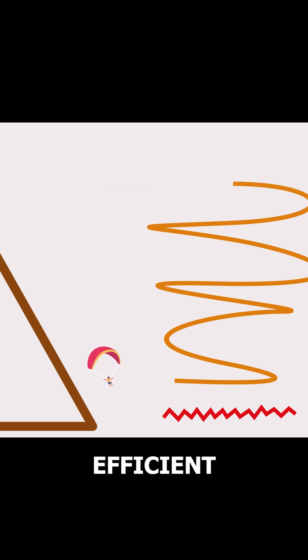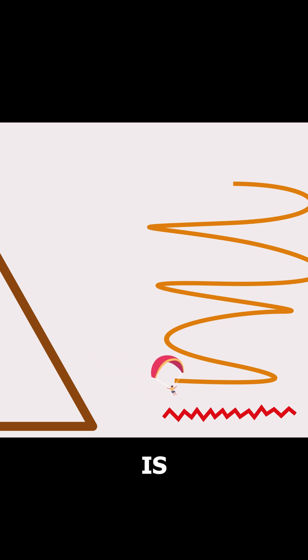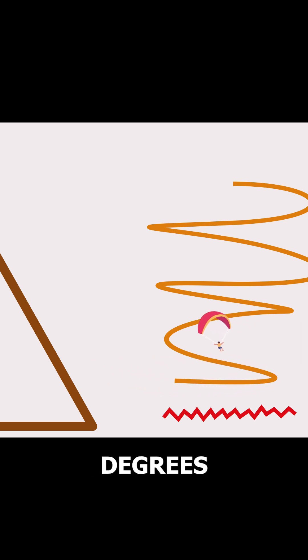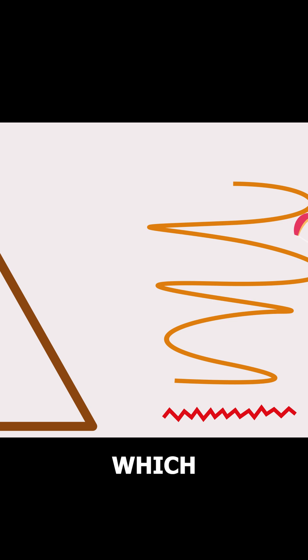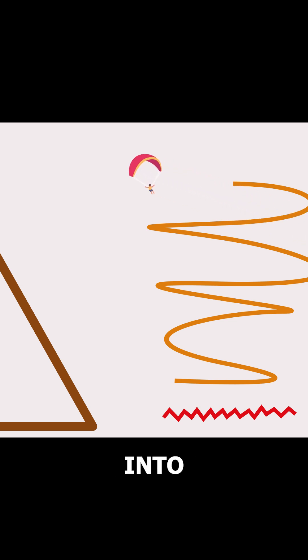The most efficient way to use these thermals is by making 360-degree turns within them, which we call spiraling into a thermal.